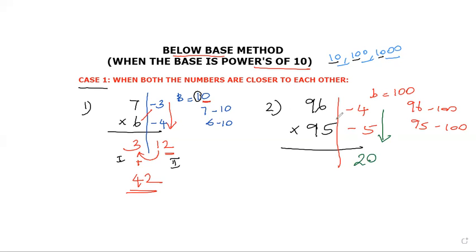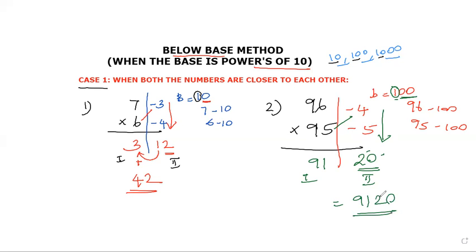Vertically multiply the differences: 4 into 5 gives 20. Since we have negative differences, cross subtract: 95 minus 4 gives 91. Check the digits: the base has two zeros, so the second part needs two digits — 20 has two digits, so that is correct. The base digit is 1, so no need to multiply the first part. The final answer is 9120.